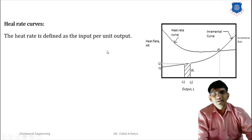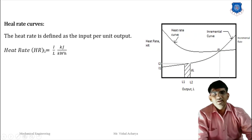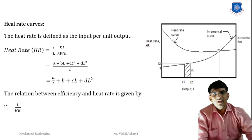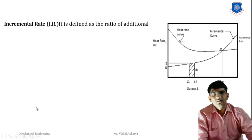Next is the heat rate. The heat rate is defined as the input per unit of heat output. As output increases, the heat rate first decreases and then becomes constant. Heat rate = input / output, with input in kilojoules and output in kilowatt-hours. So heat rate = (A + BL + CL² + DL³) / L = A/L + B + CL + DL². The relationship between heat rate and efficiency is that efficiency equals 1 divided by the heat rate — efficiency is the reciprocal of the heat rate.